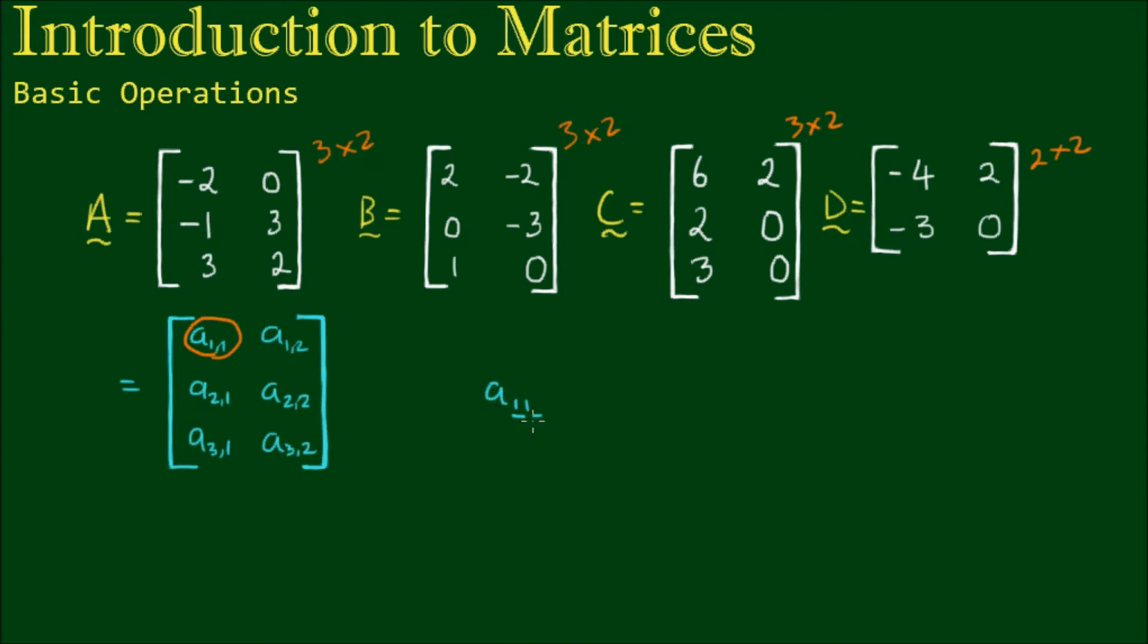So we're looking for the entry in the first row and the first column, which is equal to negative 2. Now this notation is perfectly valid when we have small matrices, and the examples that I've shown here are all relatively small matrices.